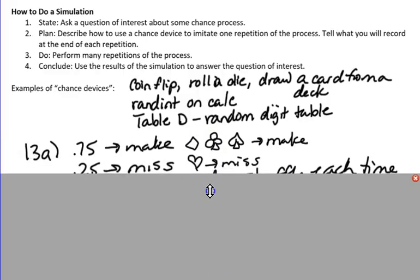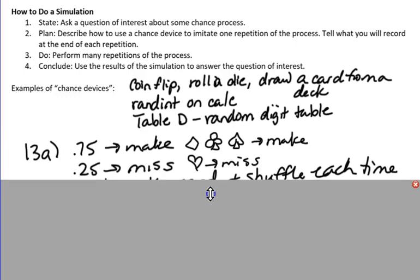Well, for the deck of cards, you would want to have 75% of the cards representing making a free throw. So you could pick three of the four suits, like diamonds, clubs, and spades, for example, to represent making a free throw, and the remaining hearts to represent missing a free throw.